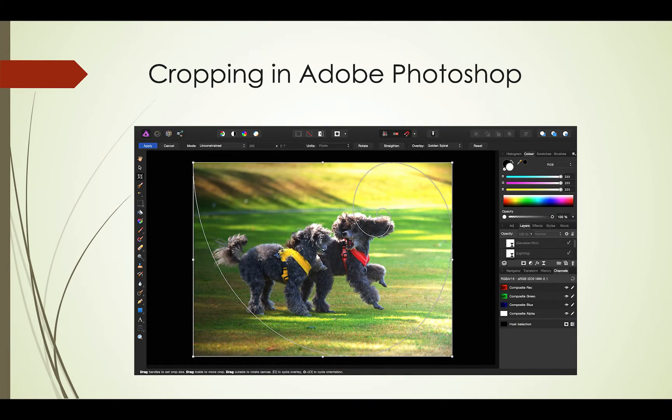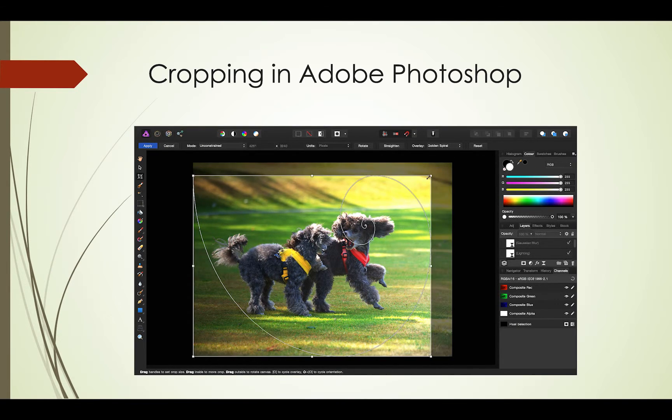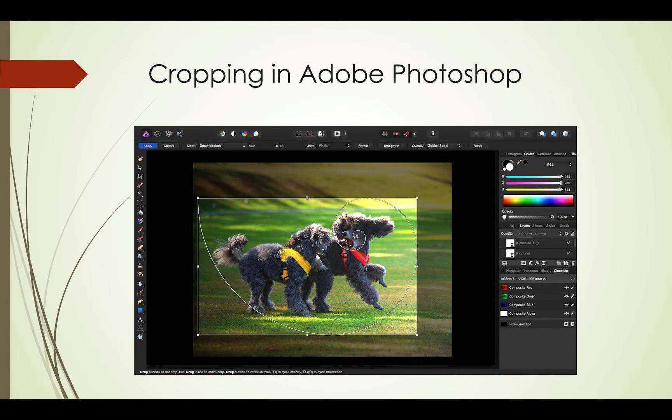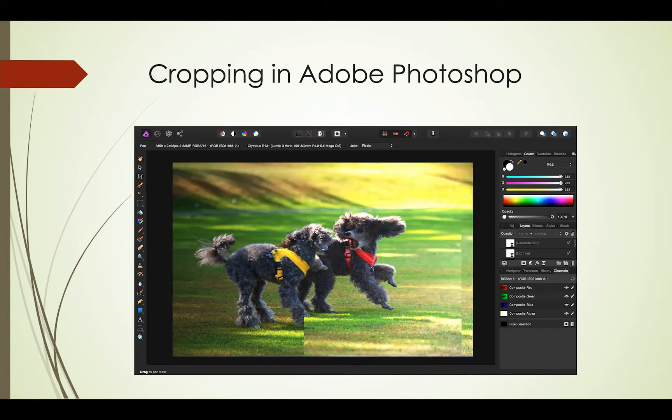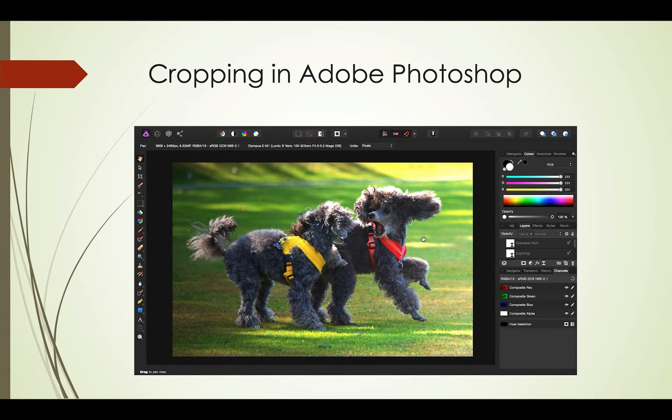And you will flip the golden spiral like so. So then I can simply go ahead and recompose my image as I need to, click apply, and I've gotten the crop I'm after. So there we go, just a really quick tip on flipping the golden spiral overlay. Thank you for watching.